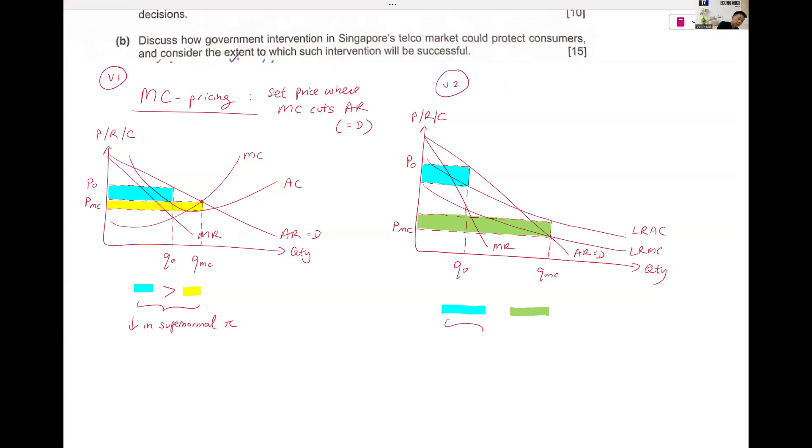I'll explain why we have two different analysis for the same policy. So this is supernormal to subnormal profits.